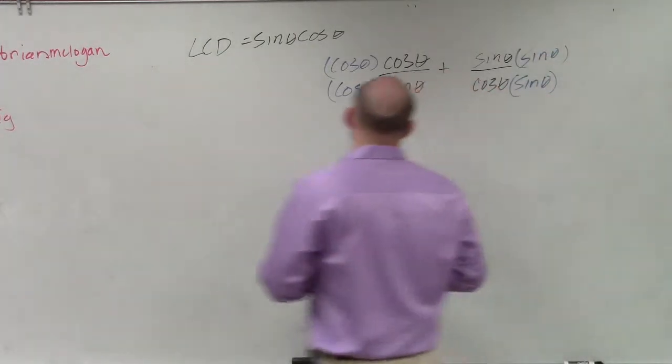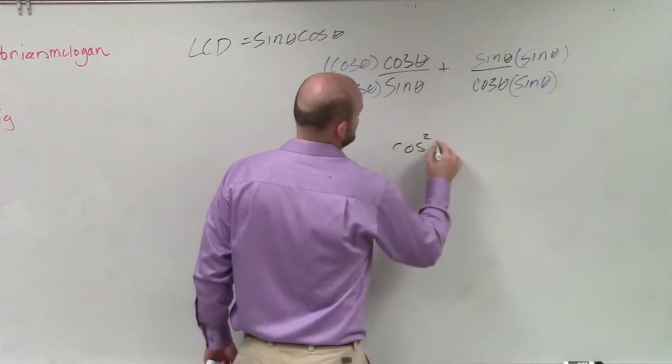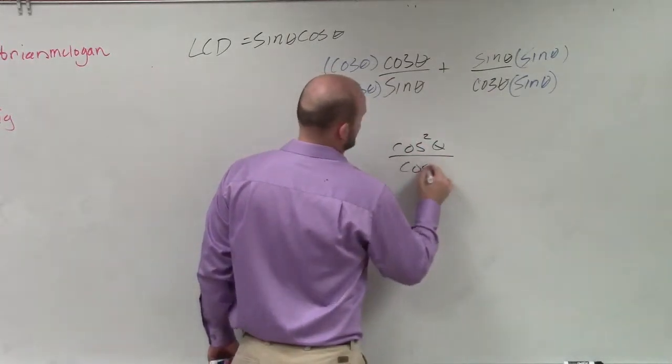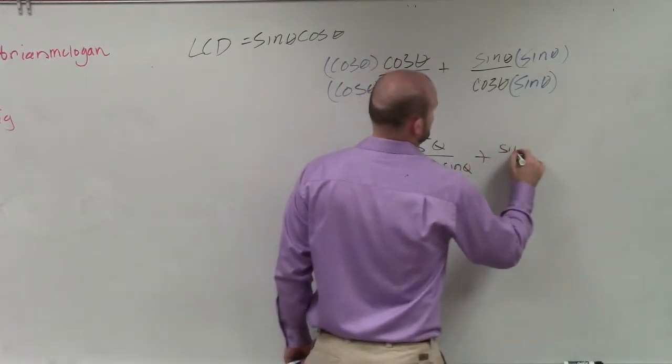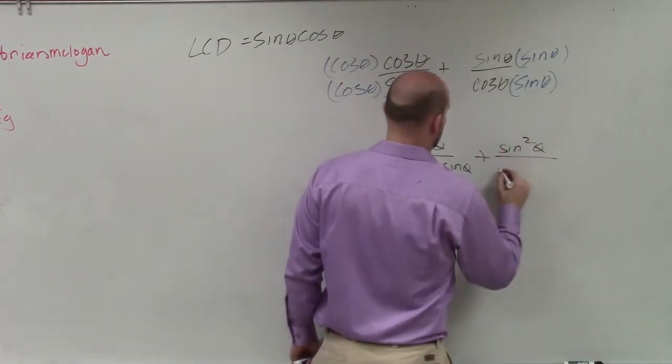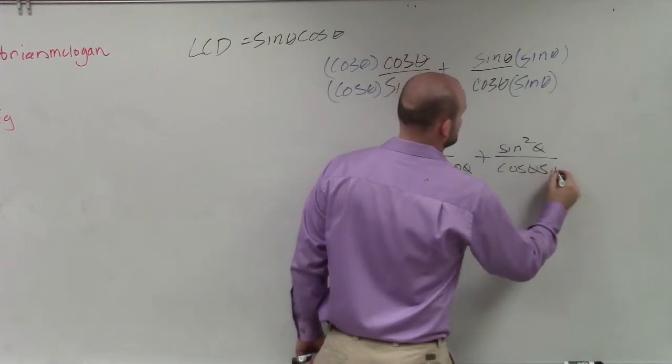So now I have cosine squared of theta over cosine of theta times sine of theta plus sine squared of theta divided by cosine of theta sine of theta.